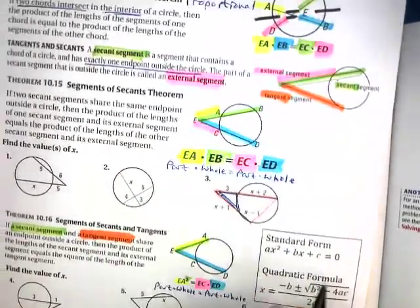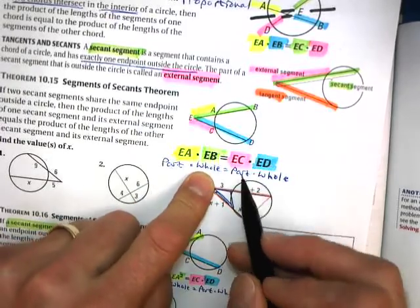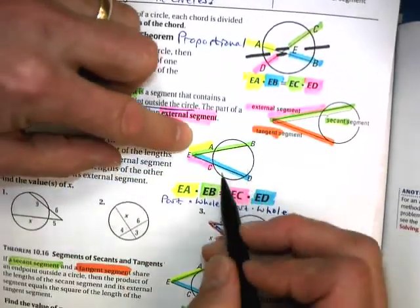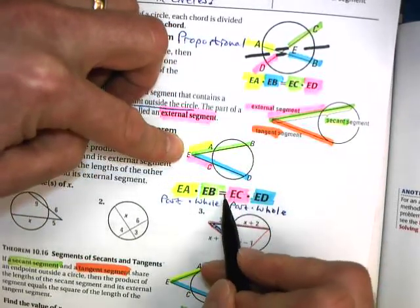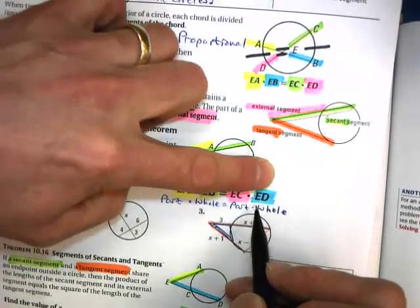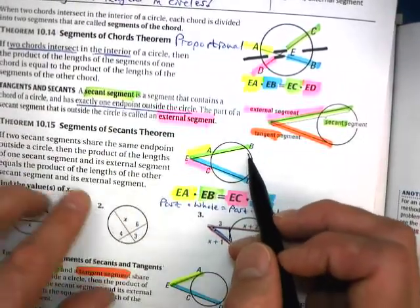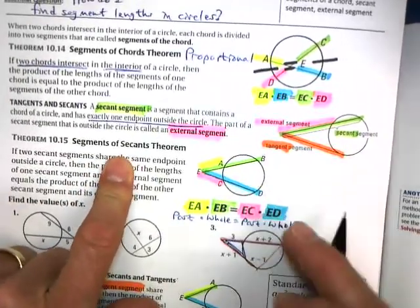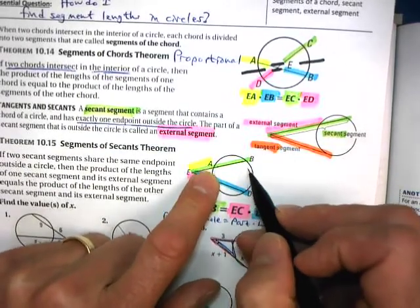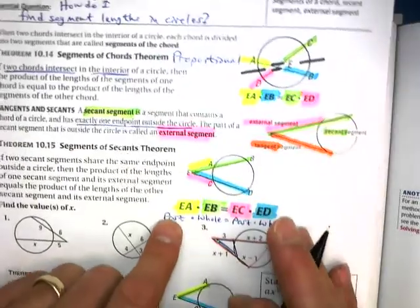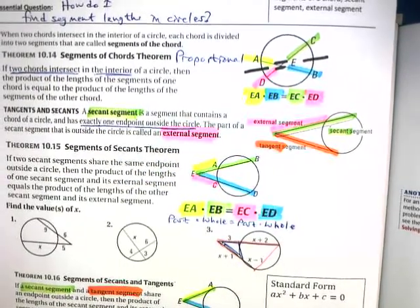Part times whole equals part times whole. So EA times EB (the whole green segment) equals EC (the part) times ED (the whole blue segment). When you have segments of secants, the triangles formed are similar but not in the same orientation, so the easiest approach is: part times whole equals part times whole.